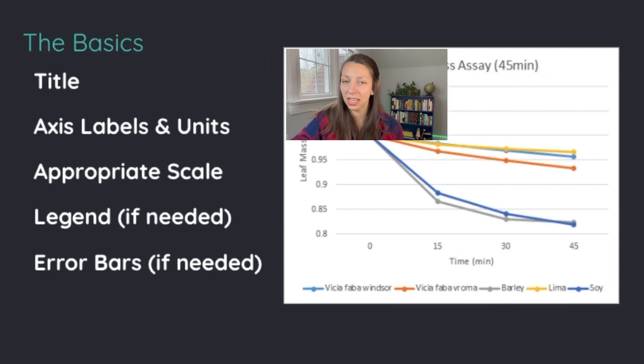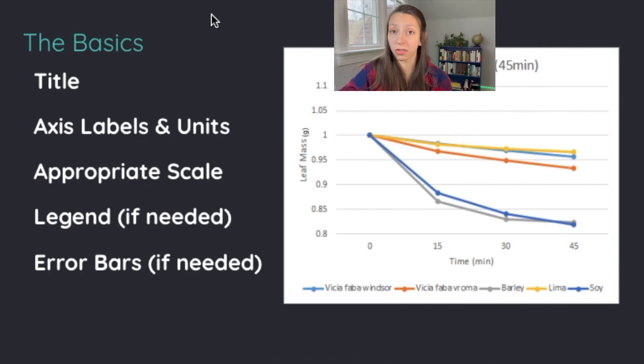So let's get back to the basics. When you're making a graph, you need to make sure you include a few very important things. Besides deciding the right type of graph to represent your data, always include a title that's very descriptive of your graph. Don't just say experiment or lab. Talk about what you're actually measuring in your title. Then make sure you have axis labels and units for those axes. Especially if you're graphing numerical data on that axis, you want to make sure, for example, the leaf mass is shown in grams here and the time is shown in minutes at the bottom. You want to make sure you have an appropriate scale for your graph. You don't want all of your graph to be squished up into one corner of your graph. You want it to fill up the space that you have as best you can.